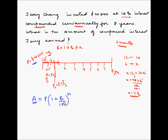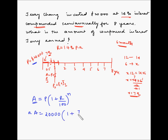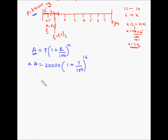R is the rate per compounding period, which is 7% for the 6-month period. Plugging in: A = 20,000 × (1 + 7/100)^16 = 20,000 × (1.07)^16.